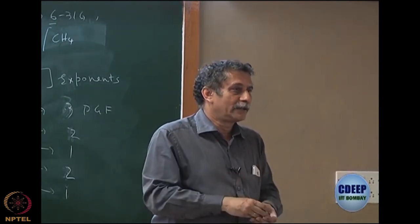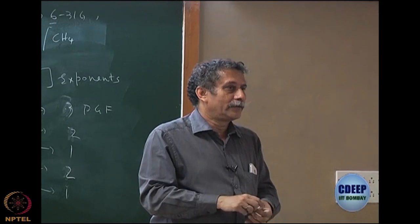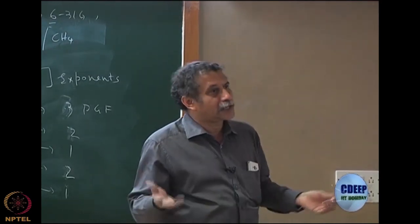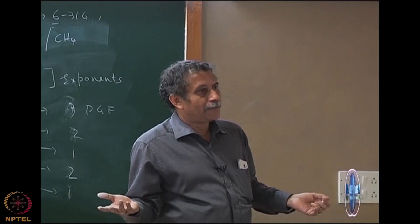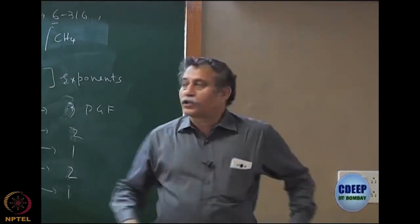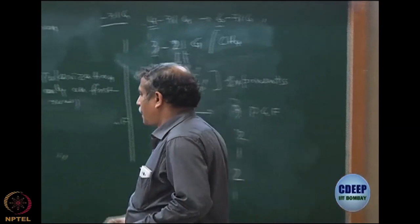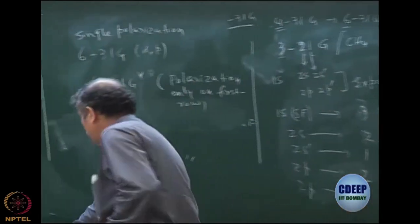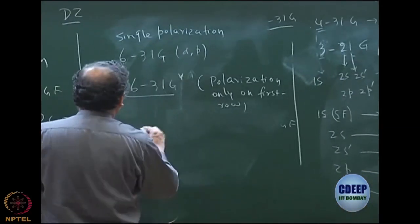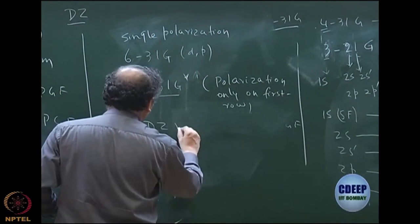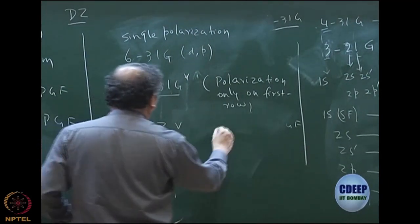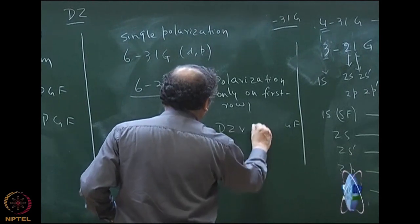More functions will give better results. You can also have more S orbitals — that is also done. The point is that at this stage you have two choices: you can have double-zeta valence, or triple-zeta valence, or you can have double-zeta valence with polarization.